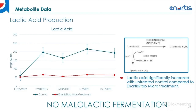Next we have the lactic acid metabolite data. Lactic acid is produced as a result of the bioenzymatic transformation of L-malic acid to L-lactic acid. We can see lactic acid significantly increased in the untreated control compared to the Anardis Stab Micro treatment, showing that there were no signs of malolactic fermentation in the Anardis Stab Micro treatment.